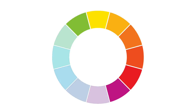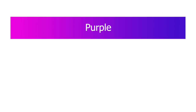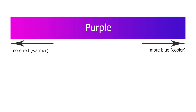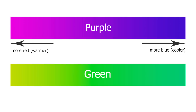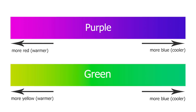Cool colors range from blue-green to blue-purple. Warm colors range from yellow-green to red-purple. Green and purple can be considered transition colors. If a purple has more red in it, then it may be considered a warm color; if it has more blue in it, it may be considered a cool color. Green is another transition color — if it has more blue in it, it can be considered a cool color, but if it has more yellow in it, it can be considered a warm color.